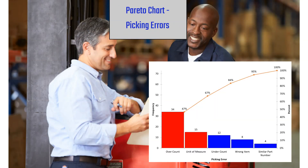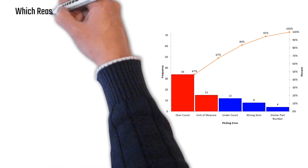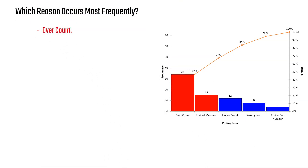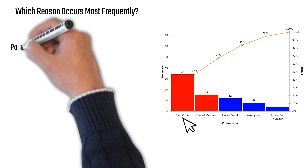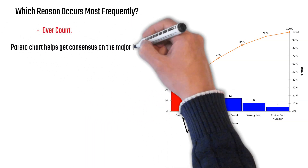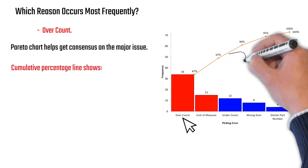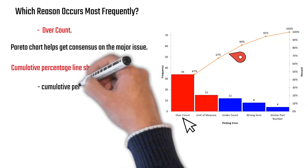Let's look at another example: picking errors in a warehouse, where pickers pick line items for shipping and sometimes make errors. We collect data on the reasons — over count, unit of measure, undercount, wrong item, and not a similar part number. The Pareto diagram makes it easy to see that over count is the largest reason, accounting for 47% of the problem.